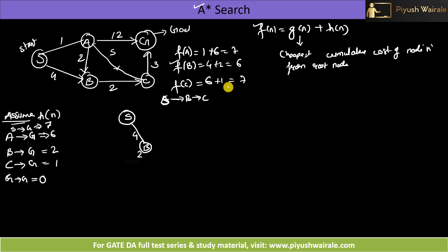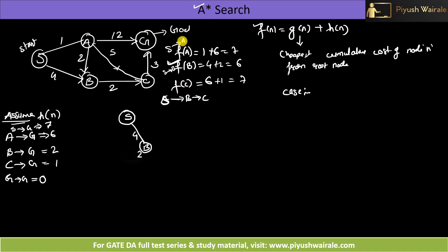We have already explored state B via S→B. Now in the open list we have S→A with f=7 and S→B→C with f=7. Both are equal at 7, so we can take either. For Case 1, let's consider f(A)=7, taking the path S→A. We will now move to A.